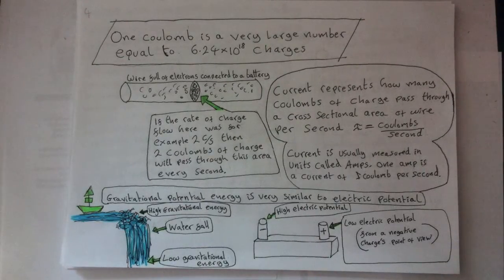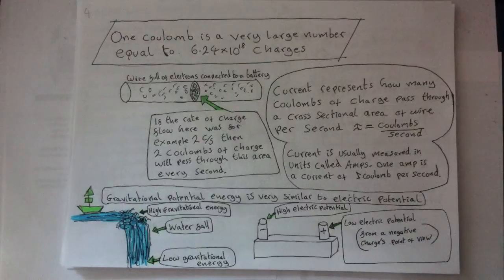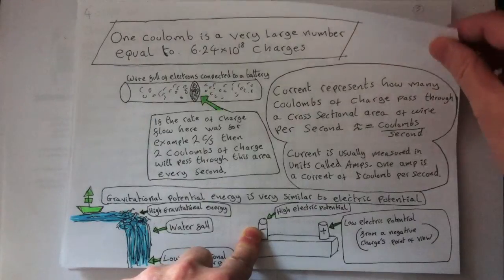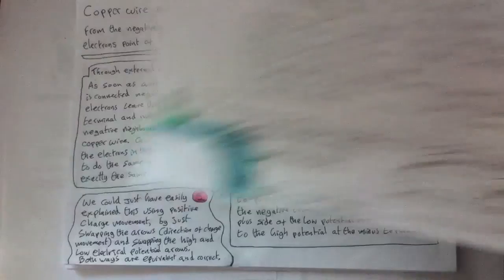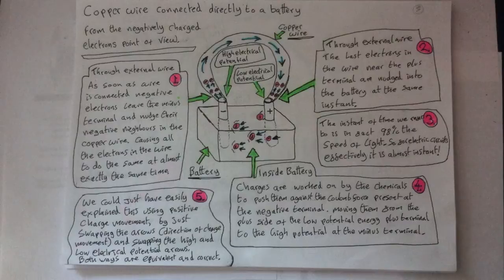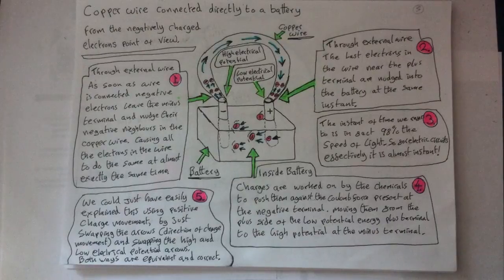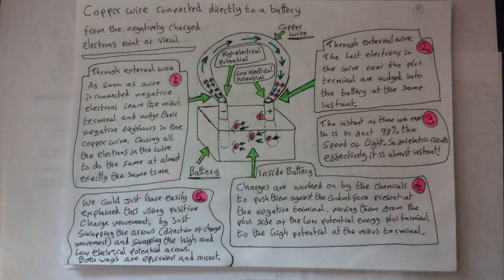Now let's think about current directly from the charges point of view. We are going to connect the terminals of a battery together with a length of copper wire. Now if we look at this from a negatively charged electron's point of view, we say that the higher potential is when the electron charges are at the negative terminal and the lowest potential is for charges when they've reached the plus terminal.